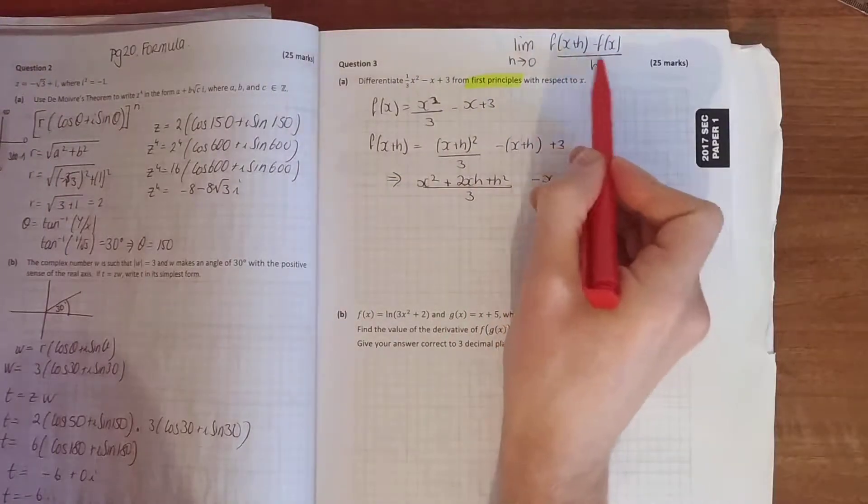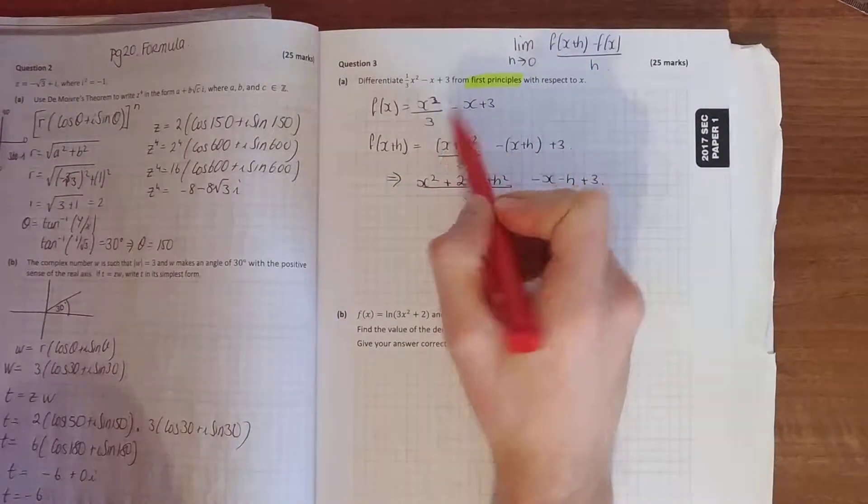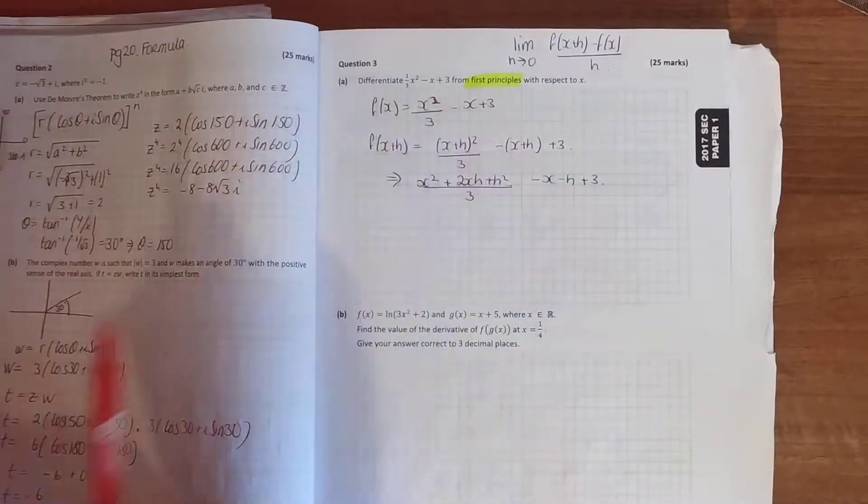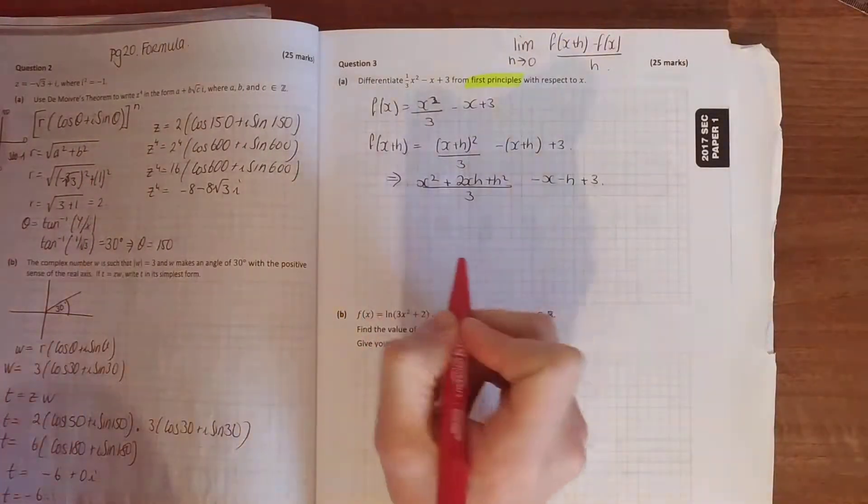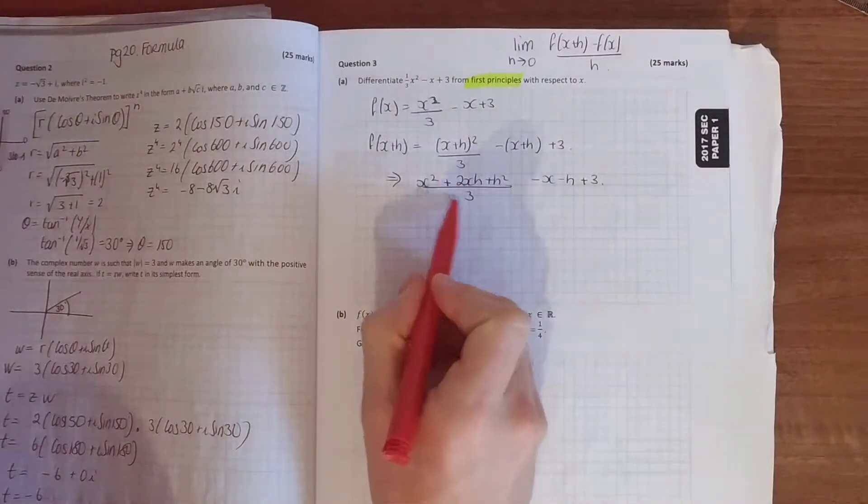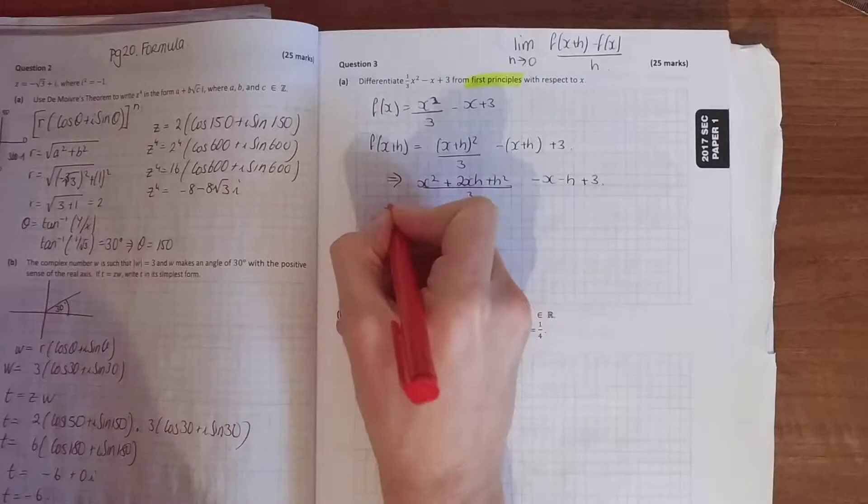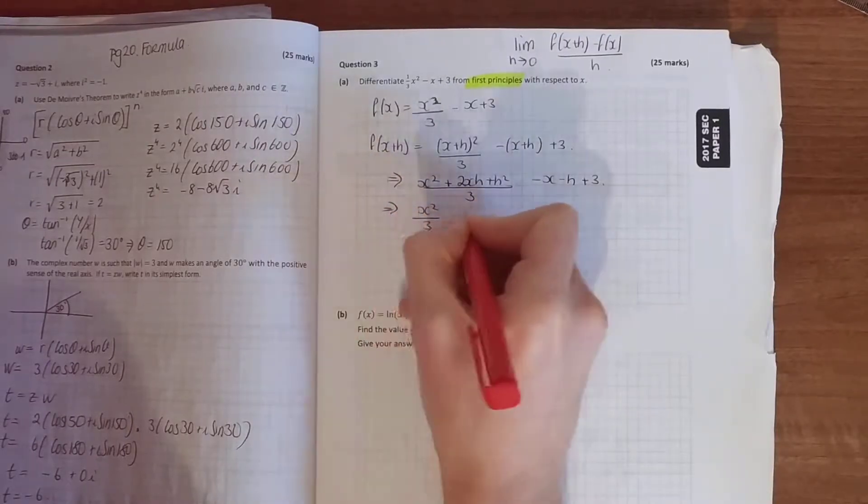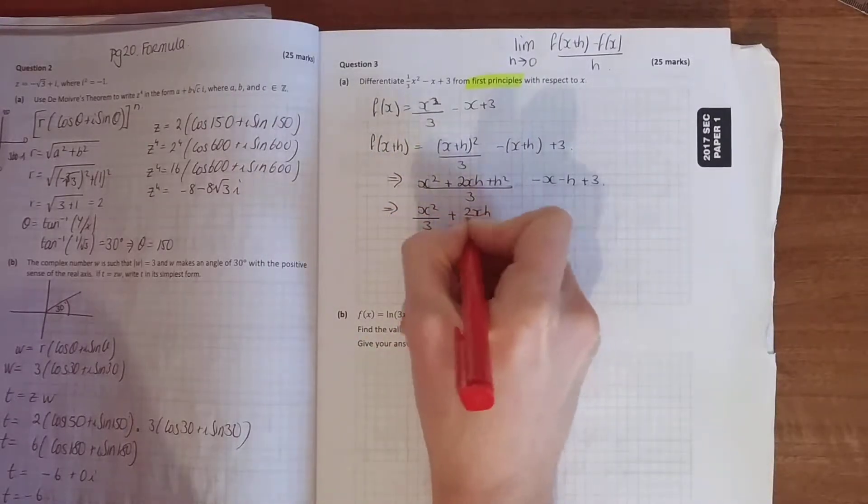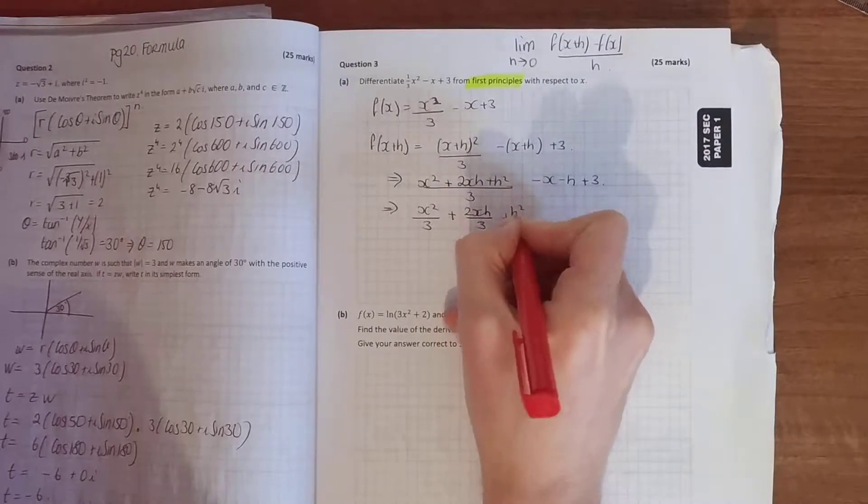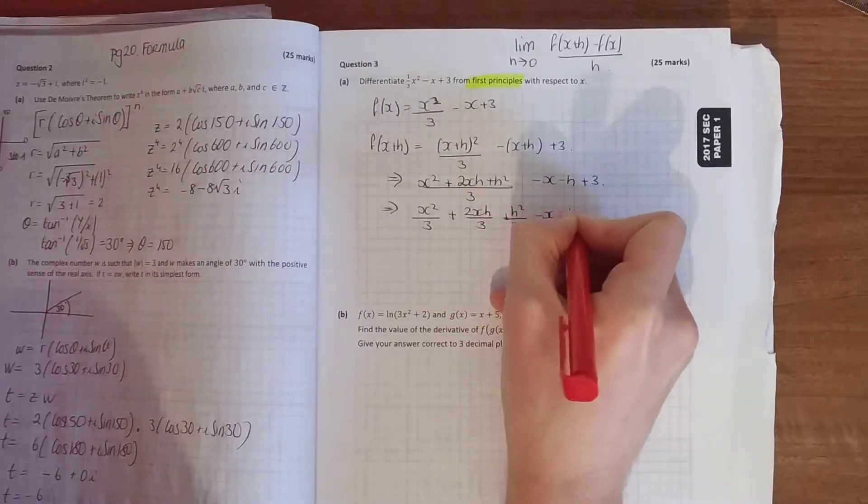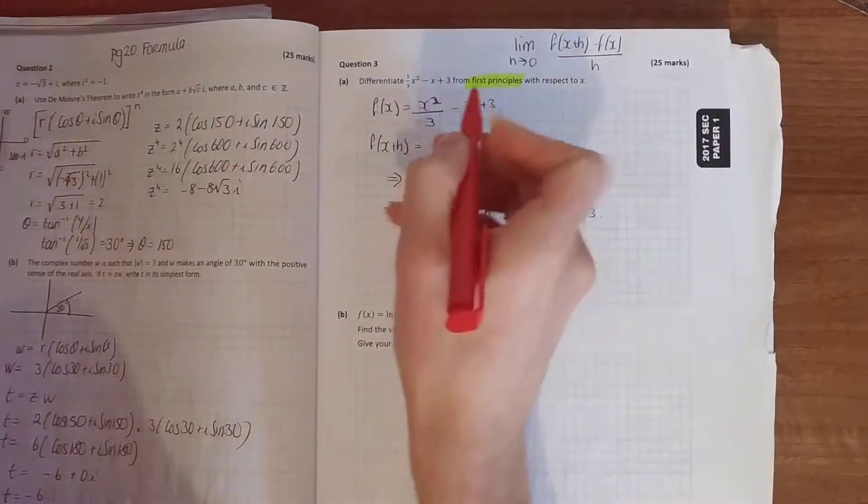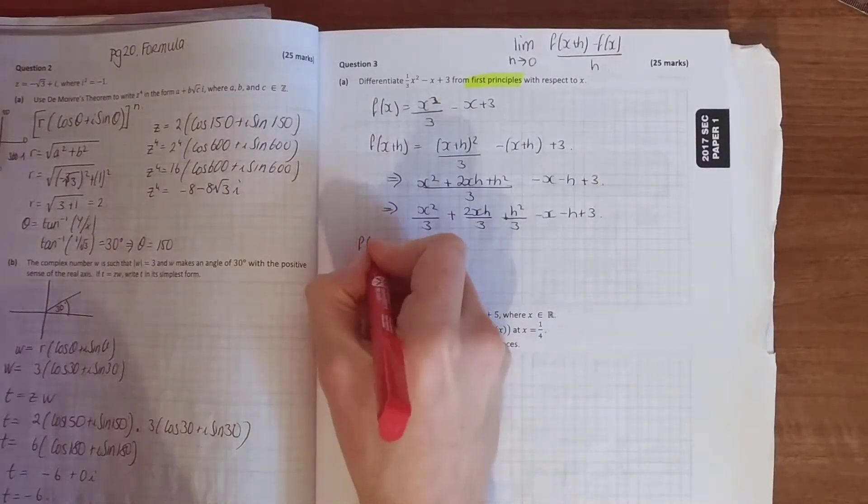Now, when you're going to do the taken away part, there's always going to be the cancellation of your f(x) terms. Although it's not too obvious here at the moment, when that's over 3, that's the same as x squared over 3. Each of these individual terms divide by 3. Plus h squared over 3. Minus h minus x. And now, carry out your subtraction.